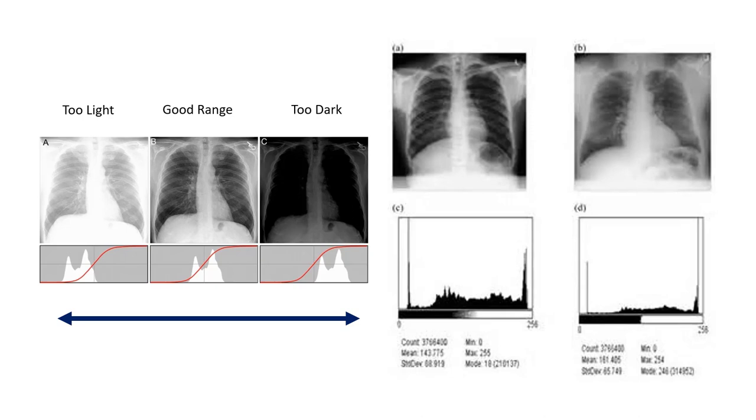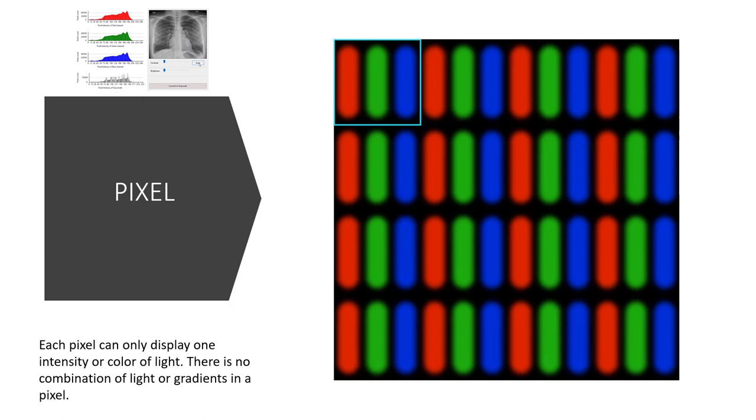Each pixel can only be one color or one shade of gray. For color, each pixel can display either red, blue, or green, which are the primary colors, which make up all colors in the spectrum. The primary colors for the visible light spectrum are red, blue, and green, and secondary, cyan, magenta, and yellow.